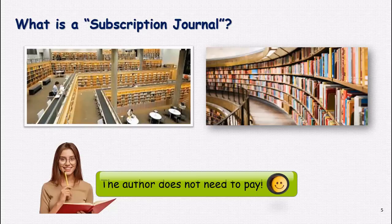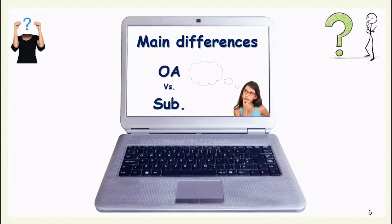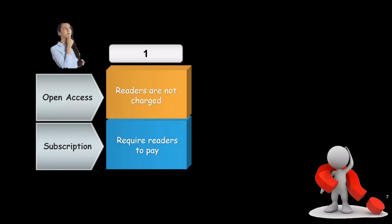Now let's look at the main differences between open access and subscription journals. For simplicity, I have summarized these differences in a table. For the first difference: in open access, readers are not charged, meaning the author pays for publishing the paper, but readers get it for free. In subscription journals, readers are required to pay, but authors don't need to pay.